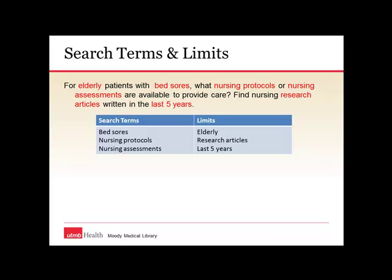When I look at my question, I've highlighted the key things that are important for my search: elderly, bed sores, nursing protocols, nursing assessments, research articles, last five years. Some of these things will be handled by search terms that I actually enter into the system. Other things I'll handle through limits, which I'll look for on the interface. So search terms are bed sores, nursing protocols, and assessments. Limits are going to be my age, the research articles, and the last five years.